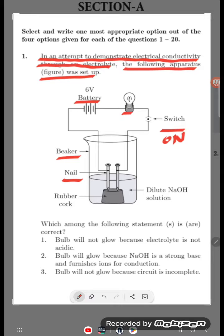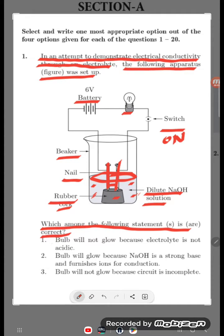Beaker is there, iron nails are there, rubber cork is there, dilute NaOH solution is there. You can see, which among the following statements are correct?